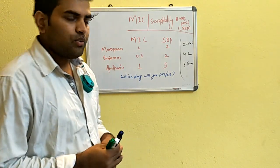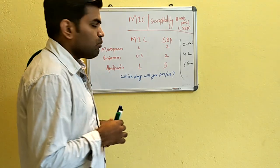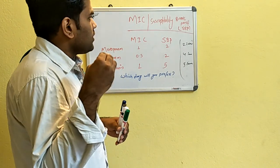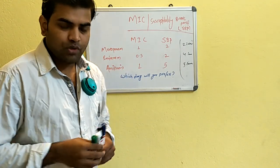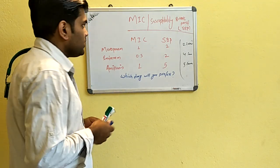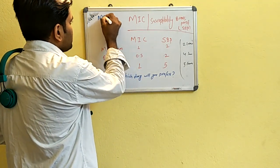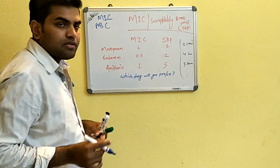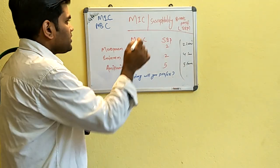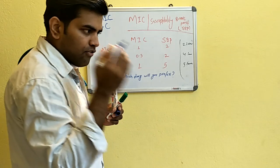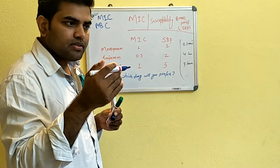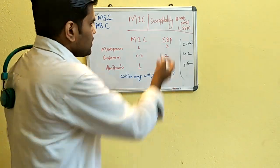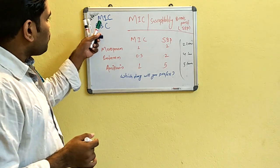Hello friends, today we will be discussing the important concepts of MIC, MBC, and susceptibility breakpoint. MIC is minimum inhibitory concentration, MBC is minimum bactericidal concentration, and the susceptibility breakpoint is a value at a point from which it determines: above that is resistant, below that is sensitive.